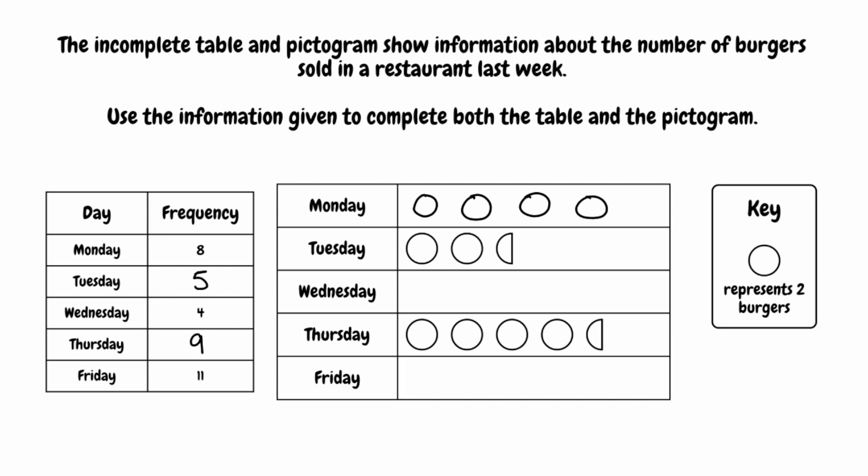Now for Wednesday, looking at our frequency table, we can see that four burgers were sold. A full circle represents two burgers, so we're going to need two of these — that would be two and four.